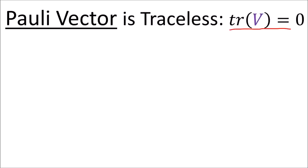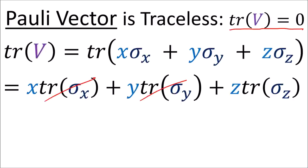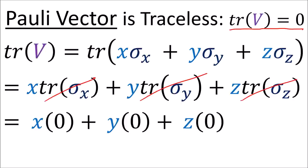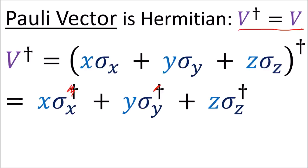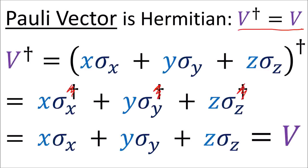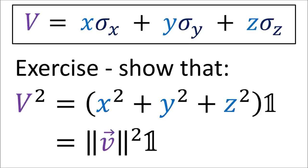We call this a polyvector, and it's an alternative way of writing a 3D vector. Polyvectors are also traceless, since the individual sigma matrices are traceless. And polyvectors are Hermitian, since each of their individual sigma matrices are also Hermitian. You can also check for yourself that multiplying a polyvector by itself will give the vector's squared length times the identity matrix.